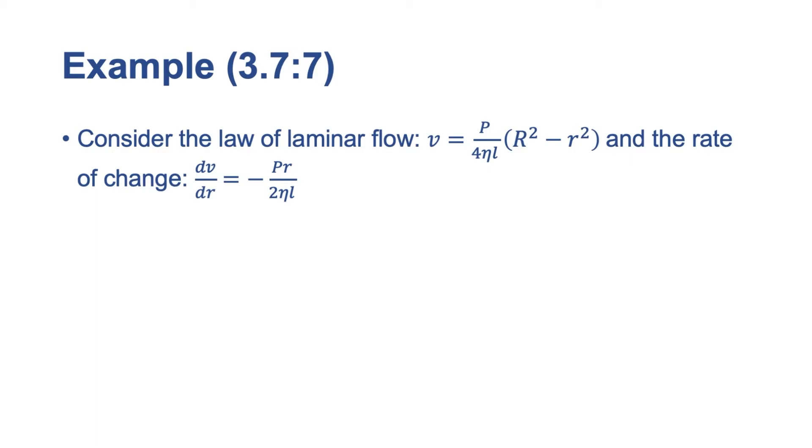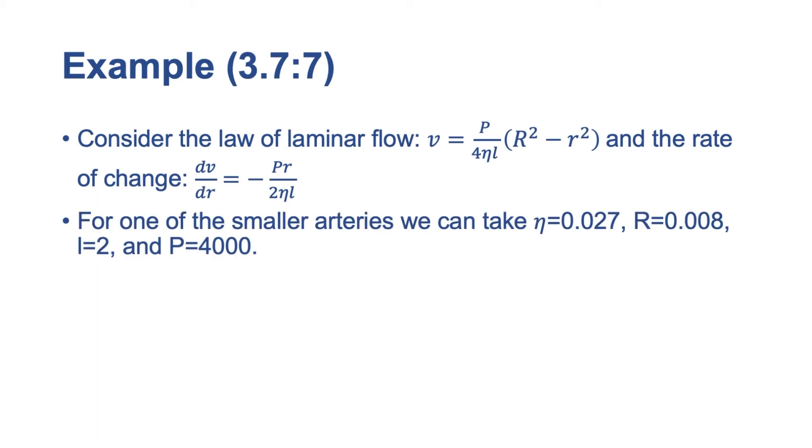Okay, so now we're going to consider a situation. For one of the smaller arteries, we can take eta equals 0.027, r equals 0.008, l equals 2, and p equals 4,000.